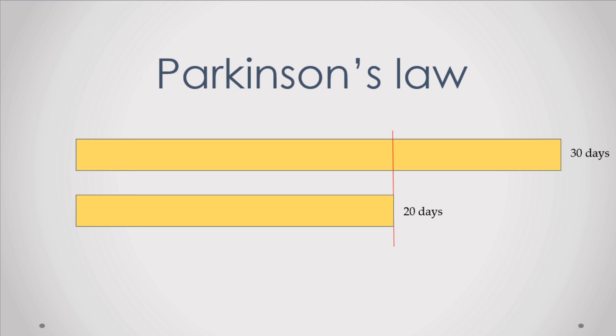You know from your experience sometimes it may take more or less than the average time. Parkinson's law states that if you have given 30 days to your laborers to complete the work, they will try to finish it in 30 days even if they can finish it in 20 days with a little more effort.